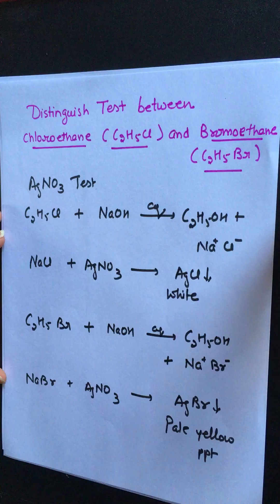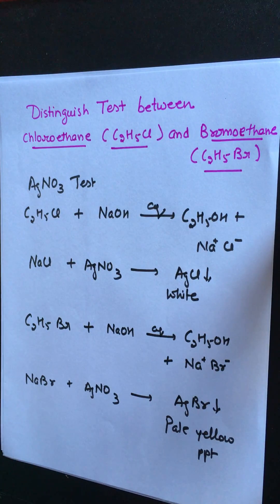This shows presence of ethyl bromide. So in this way we can do a distinguishing test between chloroethane and bromoethane.